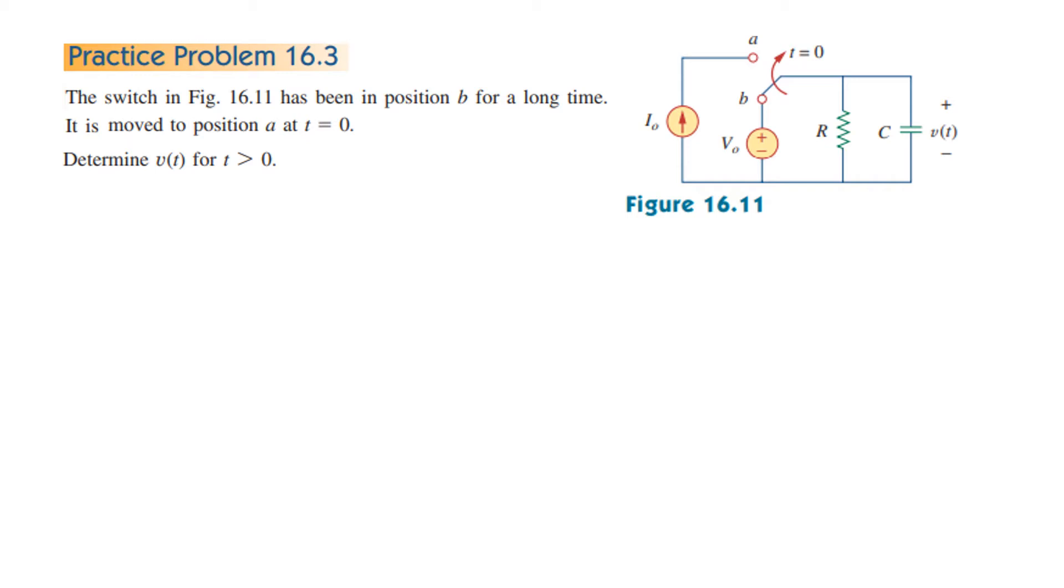The switch in figure 16.11 has been in position B for a long time, meaning it is in steady state condition. Then it is moved to position A at t equals 0. We have to determine V(t) for t greater than 0.